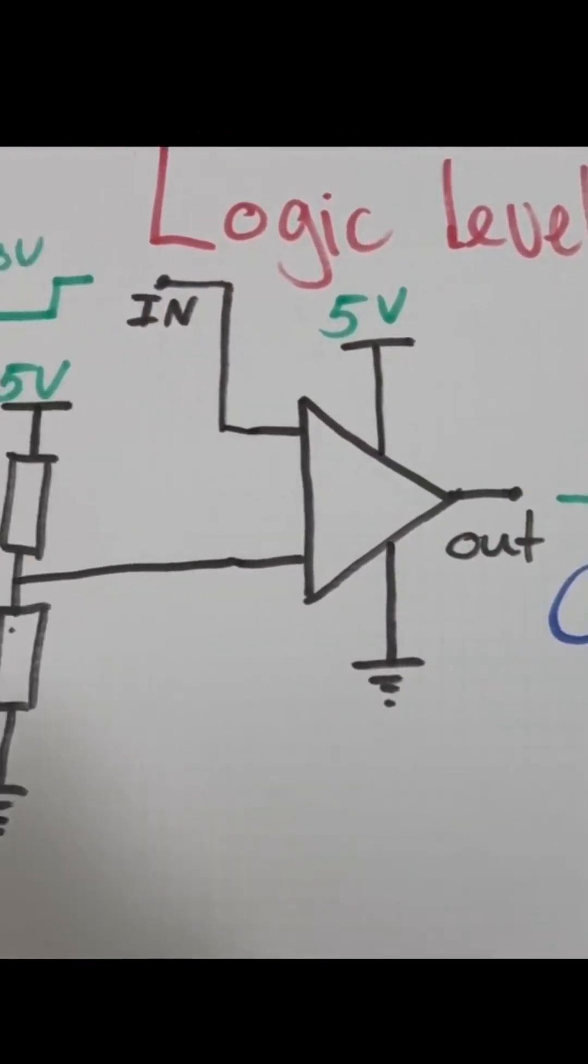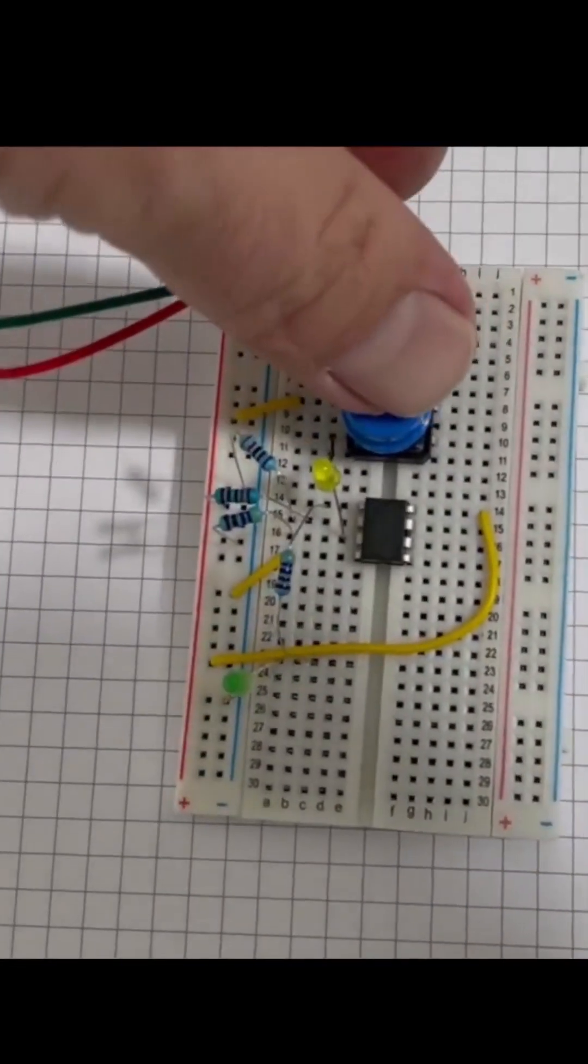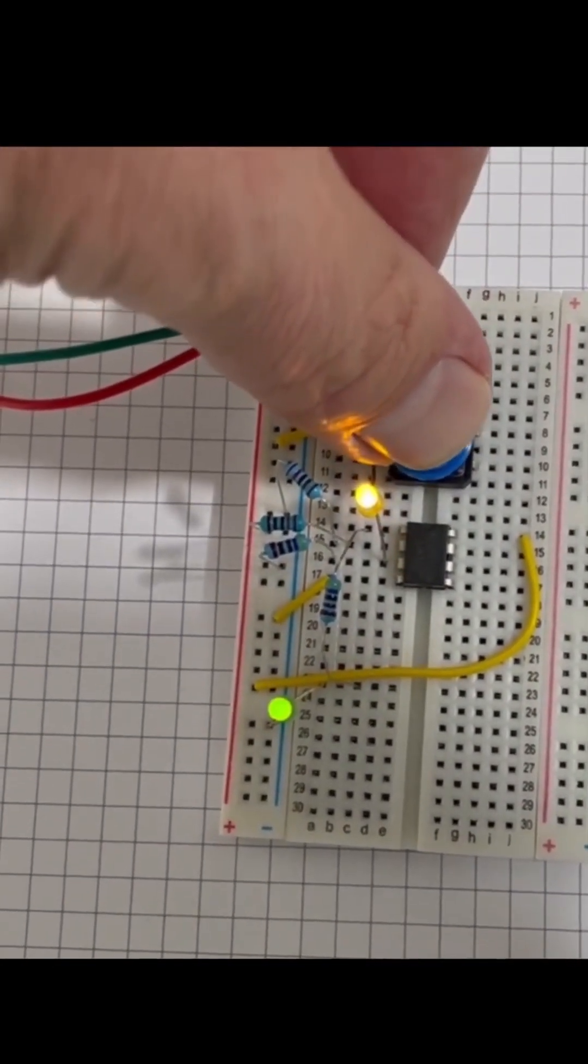Logic level converter. Make a digital 5-volt signal into a 3.3-volt signal, or the other way around.